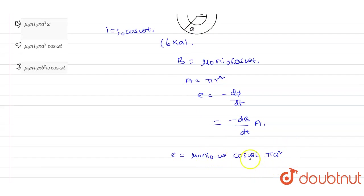Out of these four options, option C has μ₀n i₀ πa² cos(ωt), which is the correct answer for this question.